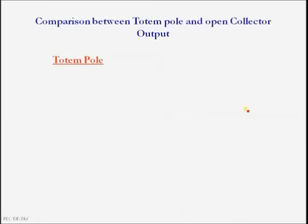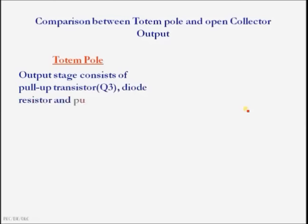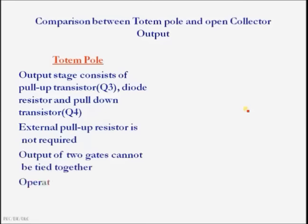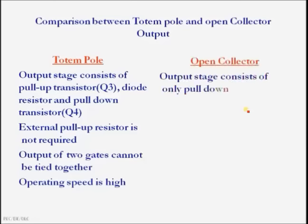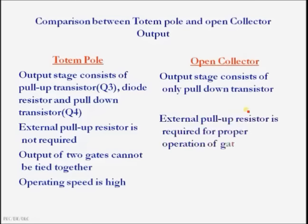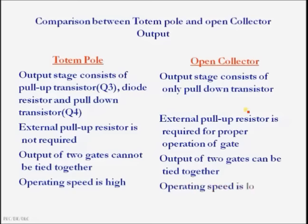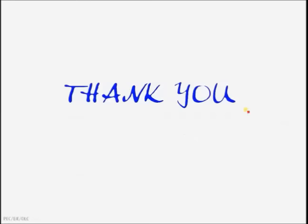Comparing totem pole and open collector output: the totem pole output stage consists of pull-up transistor Q3, diode, resistor, and pull-down transistor Q4. No external pull-up resistor is required, the outputs of two gates cannot be tied together, and the operating speed is high. The open collector output stage consists of only the pull-down transistor. An external pull-up resistor is required for proper operation, the outputs of two gates can be tied together, and the operating speed is low.